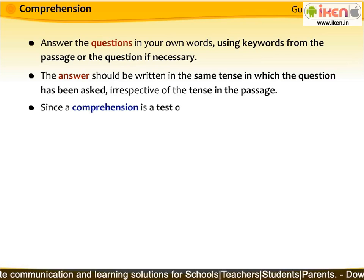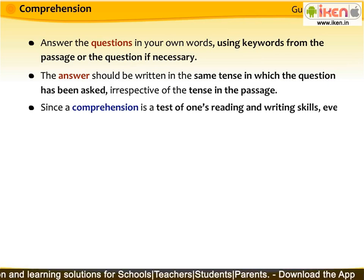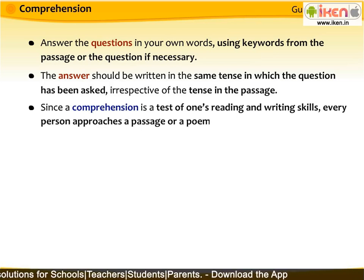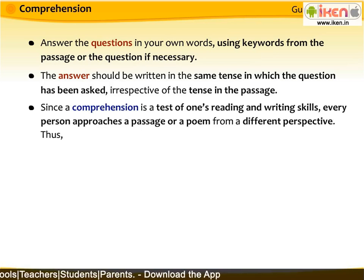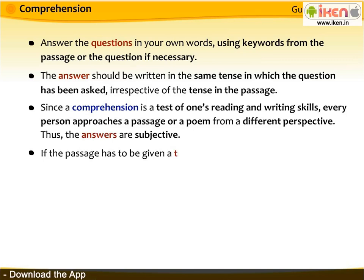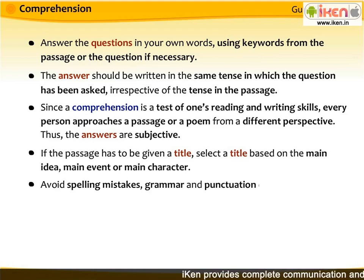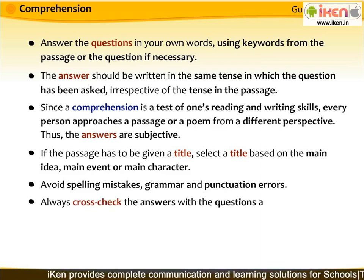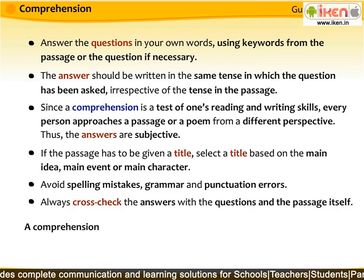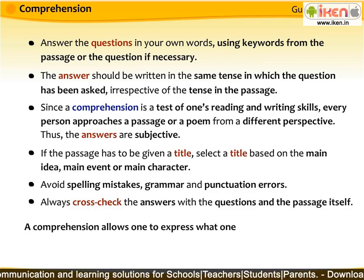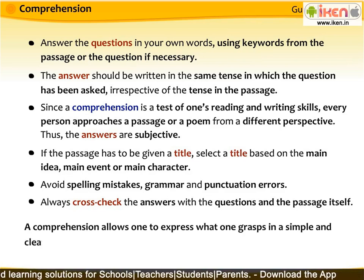Since a comprehension is a test of one's reading and writing skills, every person approaches a passage or a poem from a different perspective. Thus, the answers are subjective. If the passage has to be given a title, select a title based on the main idea, main event, or main character. Avoid spelling mistakes, grammar and punctuation errors. Always cross-check the answers with the questions and the passage itself. A comprehension allows one to express what one grasps in a simple and clear manner.